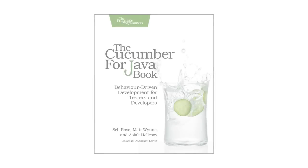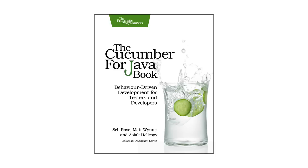This book is a Java version of the original Cucumber book, which has sold over 15,000 copies to date. It contains the same great advice about how to deliver rock-solid applications collaboratively, this time approached from the perspective of a team developing on the JVM.